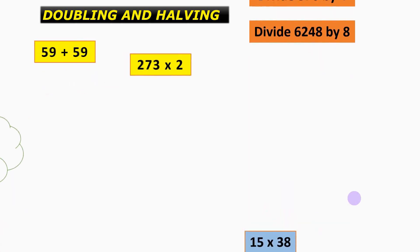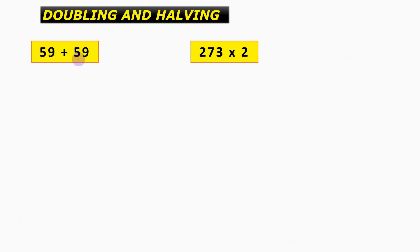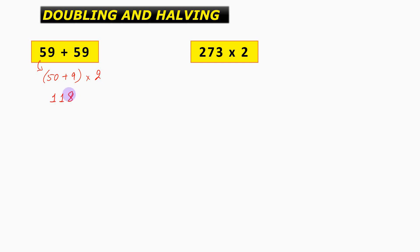The first two questions are 59 plus 59 and 273 into 2. Now 59 plus 59 is another way of saying 59 into 2. So what we need to do is multiply 59 by 2. In the previous lecture we had already studied calculation using splitting, and that is what we are going to practice here also. We are going to say that 59 can be written as 50 plus 9, into 2. Now 50 into 2 is 100, and 9 into 2 is 18. So we need to add these two numbers — 100 and 18 — thereby getting us the answer as 118.